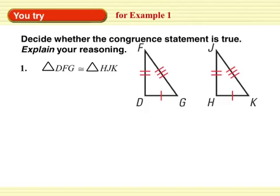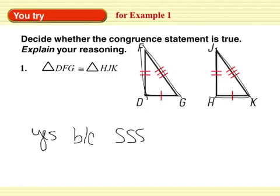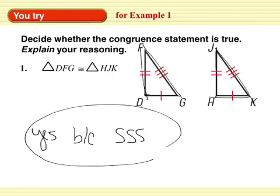Okay, you try. Decide whether the congruent statement is true. Explain your reasoning. Push pause. Pretty simple. We know that side is congruent to side, side is congruent to side, side is congruent to side. So yes, they're congruent because side, side, side. You do need to make sure that everything is in the right order. D, F, G goes to H, J, K.